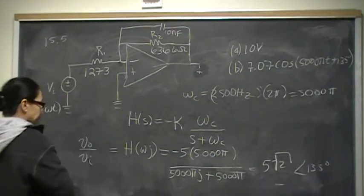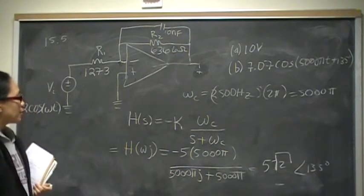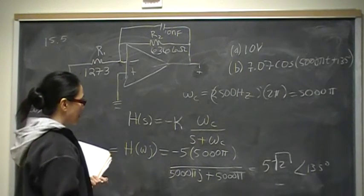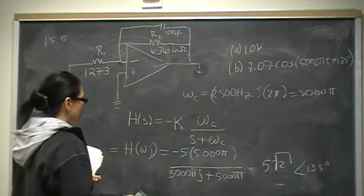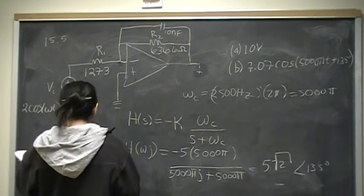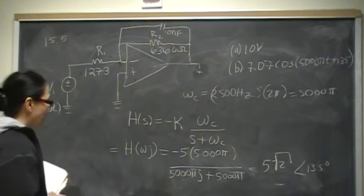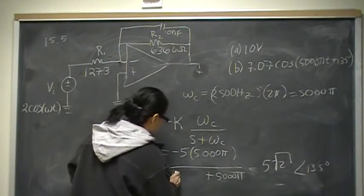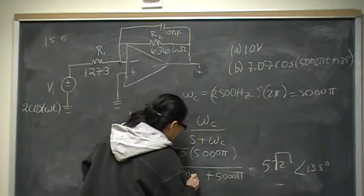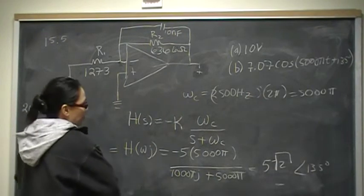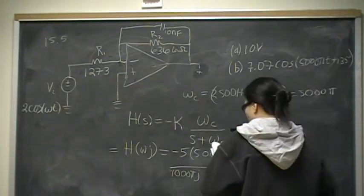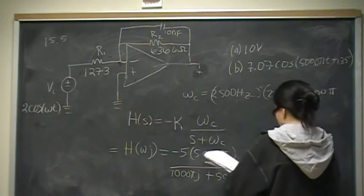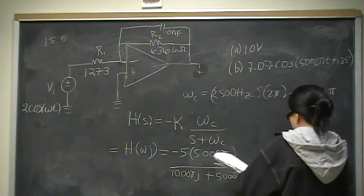That's part b, and it's more of the same for the rest. You use the transfer function and find the angle. For part c, omega is 0.2 times the cutoff frequency, which is 1,000 pi. The only thing that changes is the denominator becomes 1,000 pi·j. When you do that, you should arrive at a transfer function value of 4.9 at angle 168°.